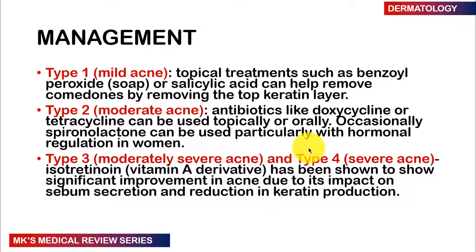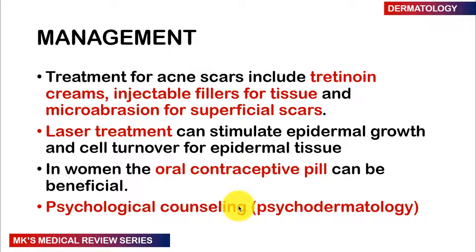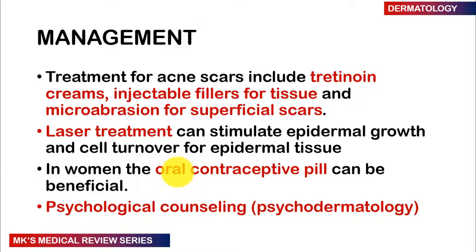For type 3 moderately severe and type 4 severe acne, vitamin A derivatives such as isotretinoin can be used and have shown significant improvement by reducing sebum secretion and keratin production. For scarring, options include tretinoin creams, injectable fillers, microdermabrasion for superficial scars, and laser treatment to stimulate epidermal growth and cell turnover — though these procedures are expensive. In women, the oral contraceptive pill may be beneficial. Because acne affects emotional and mental health, psychological counseling — known as psychodermatology — should also be offered.